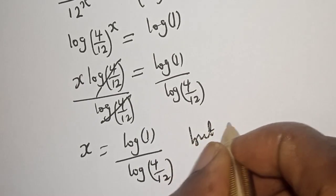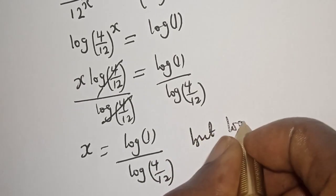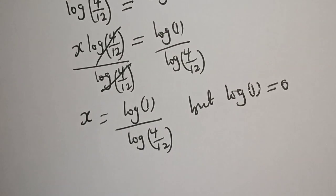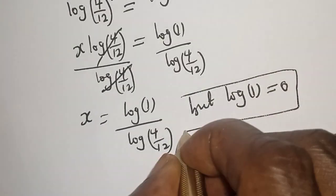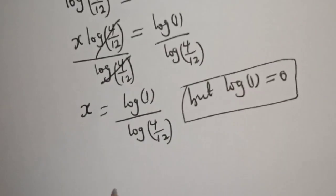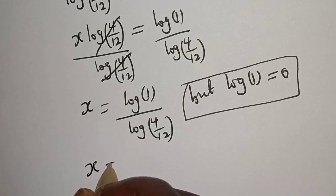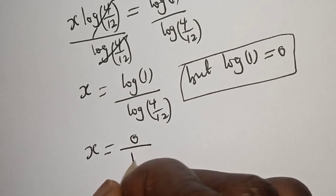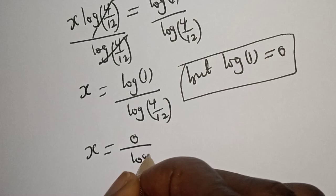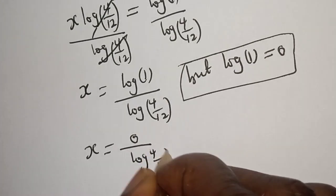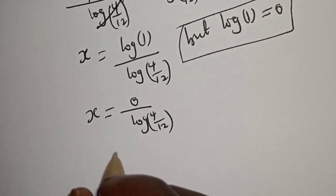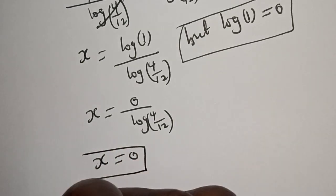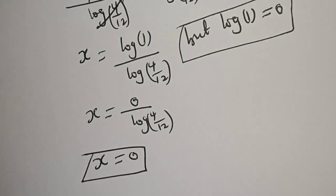But log 1 is equal to 0. Therefore, s is equal to 0 divided by log of 4 over 12, which gives s is equal to 0. So, this is the final answer.